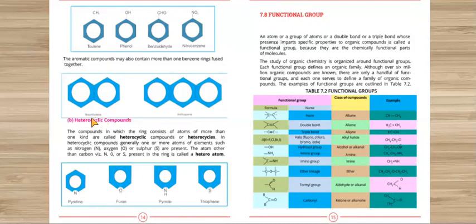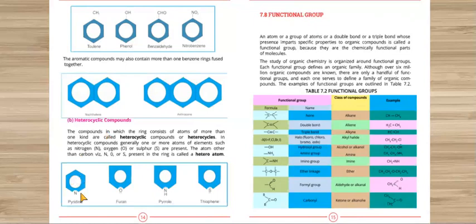The next type is heterocyclic compounds. These are ring compounds in which the ring contains one or more atoms other than carbon — we call these hetero atoms. Generally, along with carbon, the hetero atoms present are nitrogen, oxygen, sulfur, and others. For example, a 6-membered ring with one nitrogen in place of carbon is pyridine. A 5-membered ring with one oxygen is furan. A 5-membered ring with one nitrogen is pyrrole. A 5-membered ring with one sulfur is thiophene.